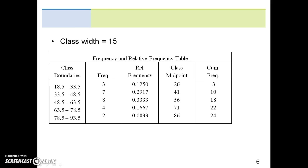The class width should be calculated at 15. Provided the class width, your frequency table and relative frequency table should look as follows. You'll notice there's a column for frequency, relative frequency, and cumulative frequency on the end.